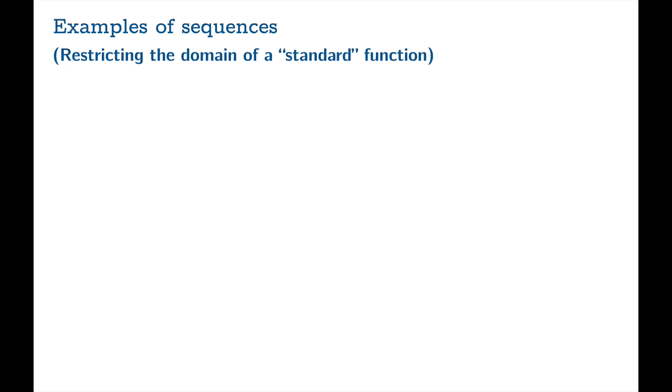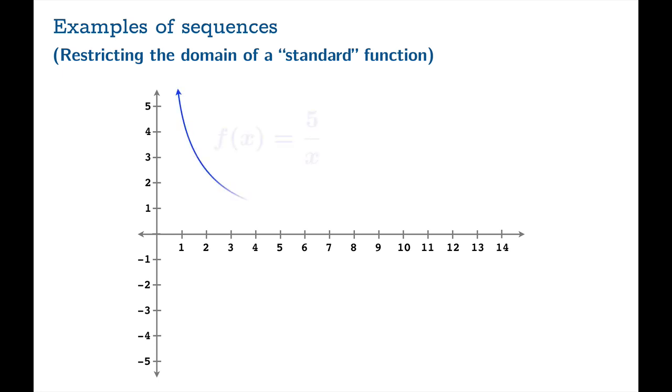So where do sequences come from? Well, one obvious way to find a sequence is to just take a good old-fashioned function from precalculus and restrict your domain. So let's take 5 over x and restrict our domain to the natural numbers. So here's a formula for our sequence, and we'll use subscript notation. And it's also quite good practice to explicitly include your domain just to eliminate any kind of ambiguity. So in this case, n greater than or equal to 1 is our domain. And so there's a perfectly happy sequence.